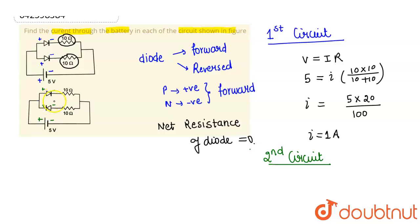So what I can say is that this particular is forward biased and this is reverse biased, this is reversed biased.